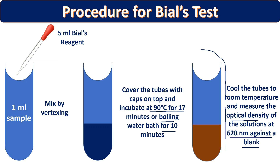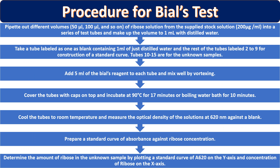Cool the test tubes and measure the optical density at 620 nanometer against a blank solution. If you only observe color, this is the qualitative test — it identifies presence or absence of pentose or hexose sugar. To quantify, measure optical density at 620 nm. For a standard graph, take 9 to 10 test tubes with different volumes of ribose sugar solution — 50, 100, 150, 200 micrograms and so on — from the stock solution.